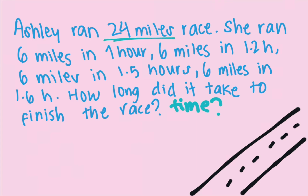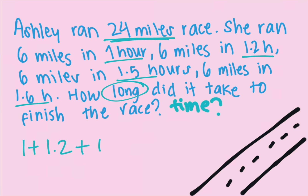To solve this kind of question, we have the total distance which is 24 miles, and they're giving us the time as well: six miles in one hour, six miles in 1.2, six miles in 1.5, six miles in 1.6. They're asking how long, which means total time, so we just have to add everything: 1 plus 1.2 plus 1.5 plus 1.6.